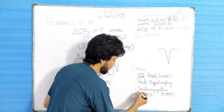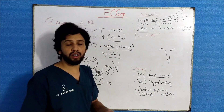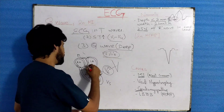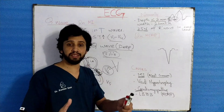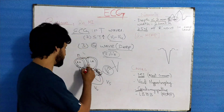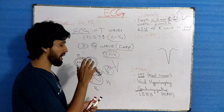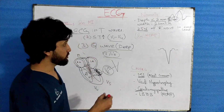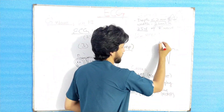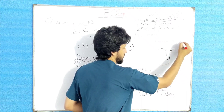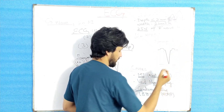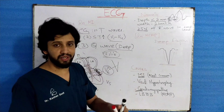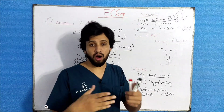Regarding hypertrophic cardiomyopathy (HCMP): there is a part of the heart — the septum — which becomes hypertrophic. As that septal muscle becomes hypertrophic, more electrical activity is captured by this hypertrophic muscle. That is why you will see a deep, dagger-shaped Q wave on the ECG paper in HCMP.